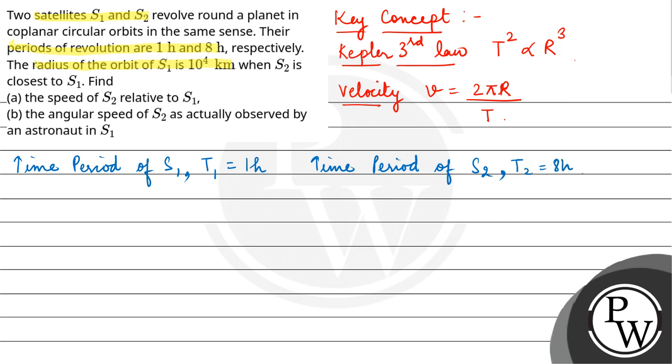The orbital radius of S1 is R1 = 10^4 km, and orbital radius of S2, R2, we need to find first. Using Kepler's law: (T1/T2)^2 = (R1/R2)^3.